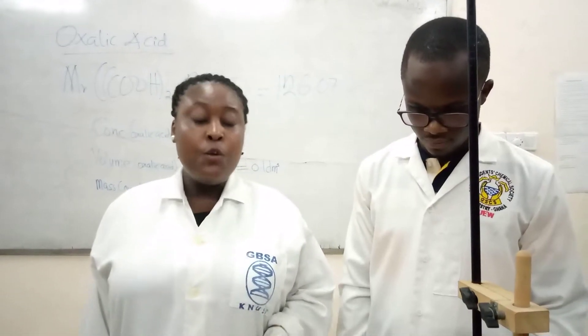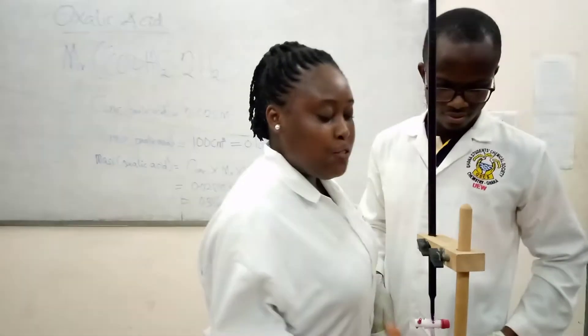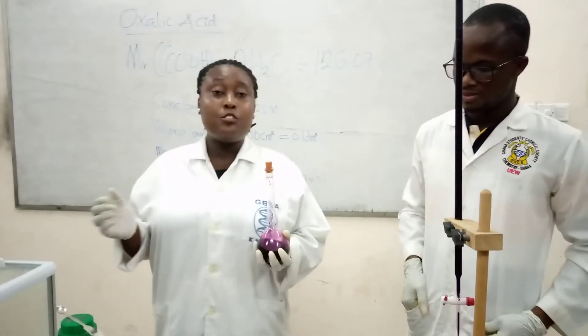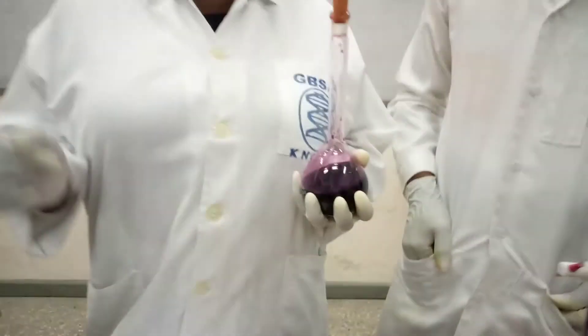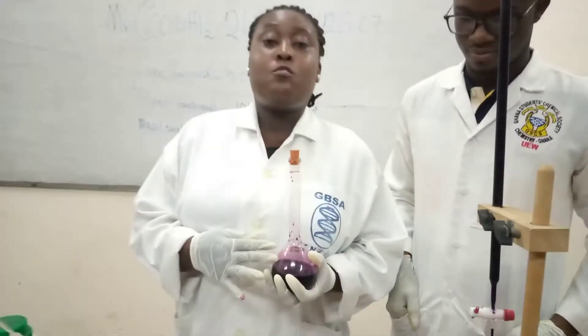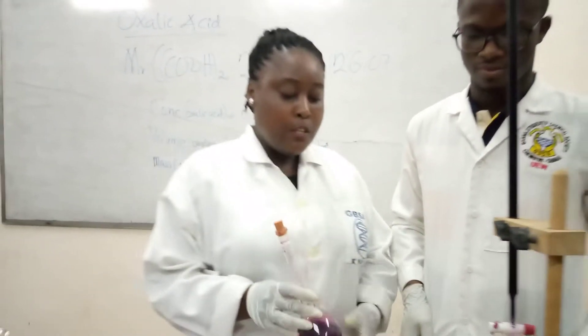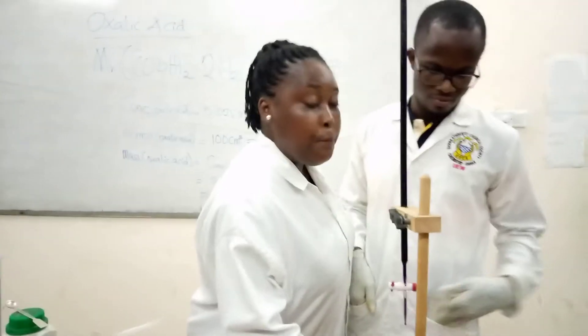The objective of today's activity is that we are going to prepare a standard solution of oxalic acid, and we will use this standard solution to standardize the potassium permanganate solution. I don't know its concentration, so I'm going to prepare the oxalic acid to help me determine the concentration of this potassium permanganate solution. We will go straight to the procedure.